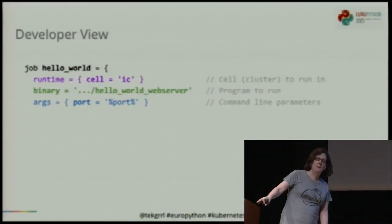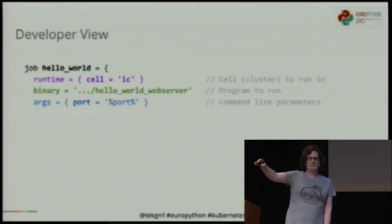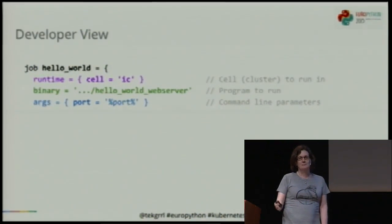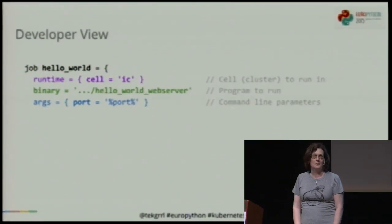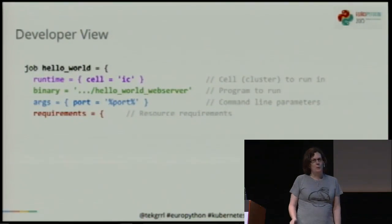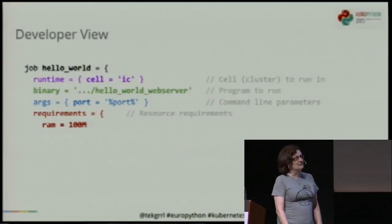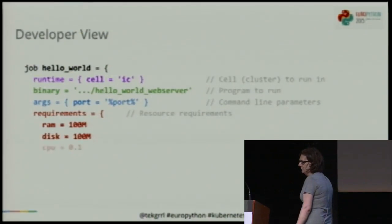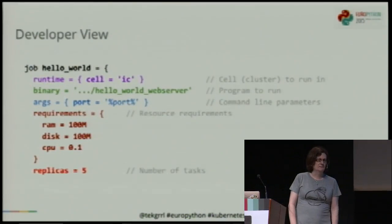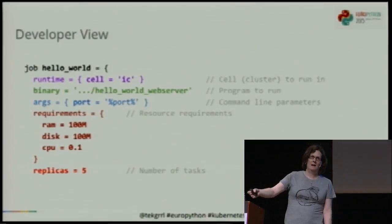The developer specifies the path to their binary. We have too many male software engineers and not enough female software engineers, so let's encourage women to be software engineers. Arguments are specified — passed in via the environment. In this case we specify what port to run on. This is parameterized. Then we have some resource requirements: we can specify how much RAM, how much disk, how much CPU. And ultimately, we say how many we want to run — in this case, five replicas of this job, five tasks.